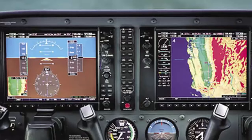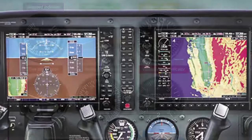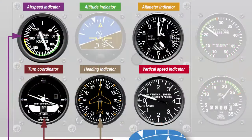Whether an aircraft has analog or digital instruments, commonly referred to as glass instruments, the instrumentation falls into three different categories: performance, control, and navigation.